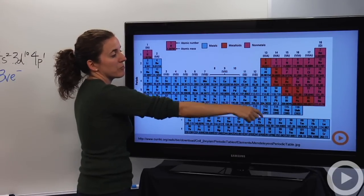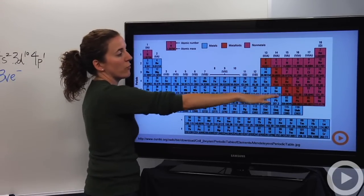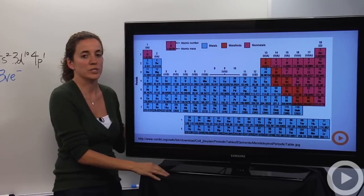Going on to group three has three, carbon's group, which is group four, has four, and so on, all the way up to the noble gases, which have eight.